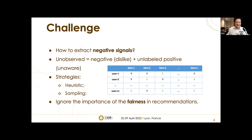Most existing recommendation models based on implicit feedback employ two learning strategies: heuristic, which treats all missing interactions as negative and assigns uniform lower confidence on them, and sampling, which determines which unobserved interactions are treated as negative to update model parameters. However, these methods only focus on maximizing user utilities and ignore the importance of fairness in recommendations.